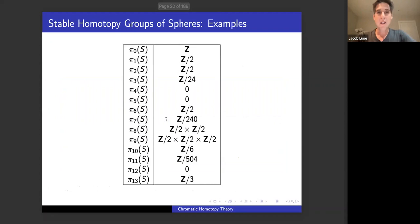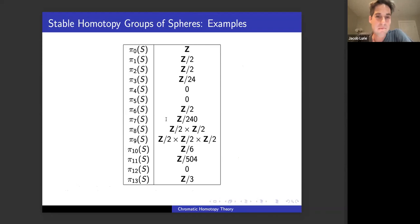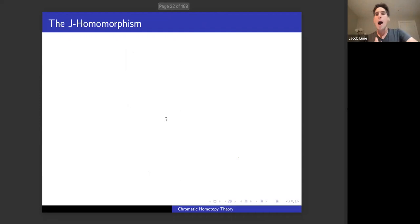Let me show you what these look like. In low degrees, here's a list of them. The question is: what's the pattern? What's going on here? Looking at this for the first time, you might say it just looks kind of random. So one question you might ask first is: how do you produce some examples of elements in stable homotopy groups of spheres?